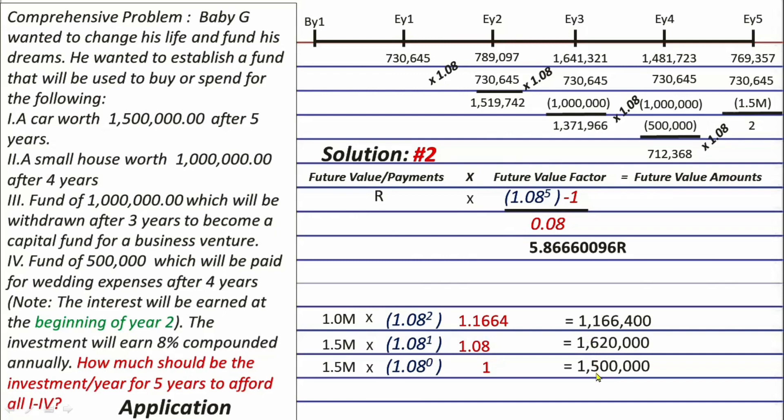Anyways, these are the future values of these amounts. What we need to do next is, we need to get the sum of all of this. And if we did, we will get 4,286,400. Now, that's the amount that we are going to use here. And because of that, we can already find the R.